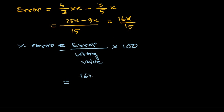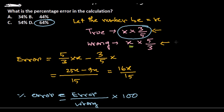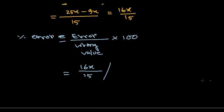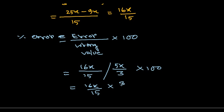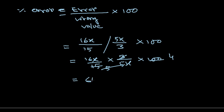Let's put in the values: (16x/15) divided by the wrong value, which is (5x/3), multiplied by 100. Rearranging: (16x/15) × (3/5x) × 100. The x cancels out, giving (16 × 3 × 100) / (15 × 5) = 4 × 16 = 64.